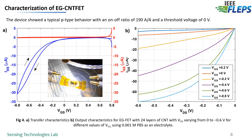Next, we recorded the output characteristics as well, where the drain-to-source voltage was swept from 0 to −0.6 V for different gate-to-source voltages, starting from +0.2 to −0.8 V. From both the transfer and output characteristics, we noticed a typical p-type behavior of the electrolyte-gated carbon nanotube field-effect transistors.